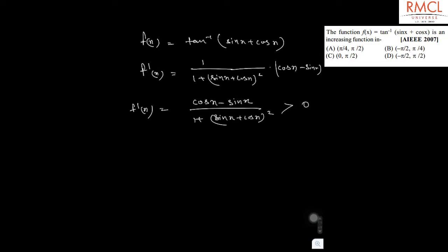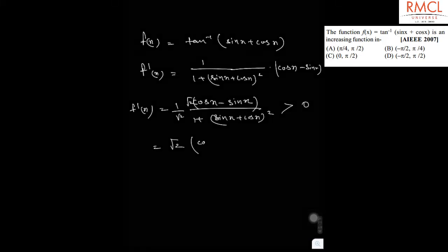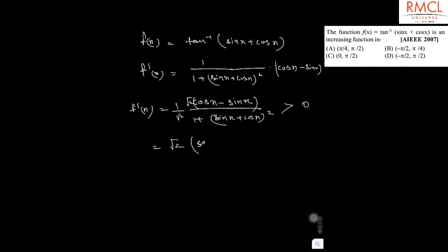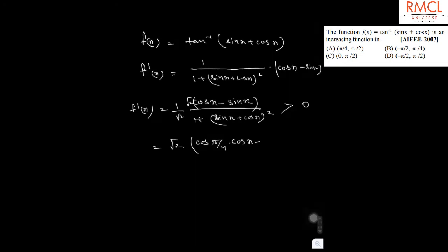So we have to find in which interval this f'(x) is greater than 0. If you multiply and divide this with root 2, then we will have root 2 multiplied by cos(π/4)cos(x) minus sin(π/4)sin(x).